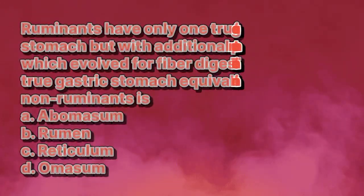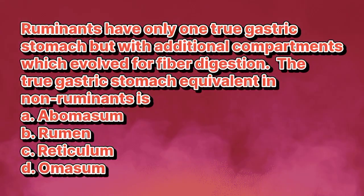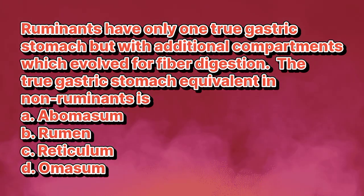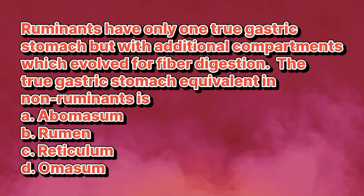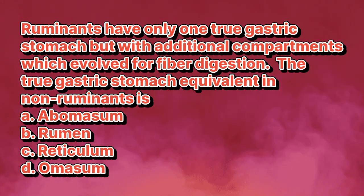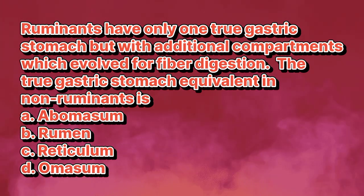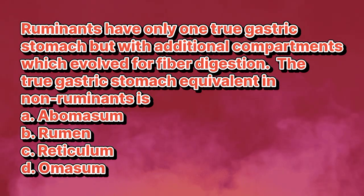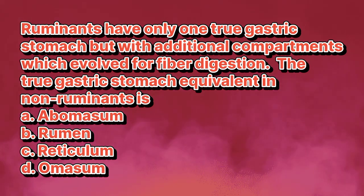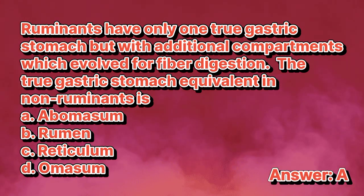Ruminants have only one true gastric stomach, but with additional compartments which evolved for fiber digestion. The true gastric stomach equivalent in non-ruminants is: A. Abomasum. B. Rumen. C. Reticulum. D. Omasum. The answer is letter A.